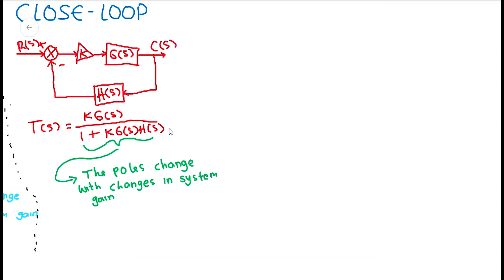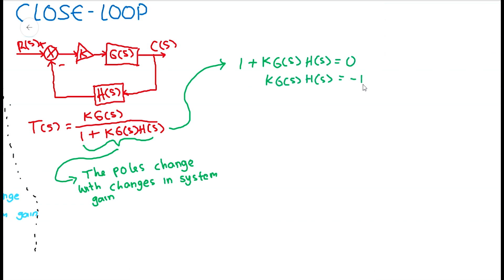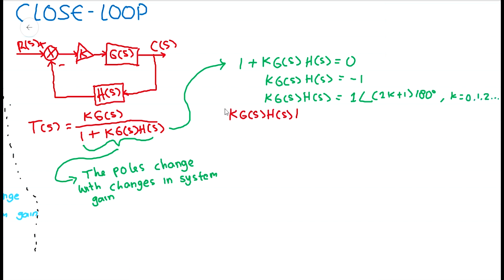Assume a pole S exists when the characteristic polynomial equals zero. We see that 1 plus K times G times H is equal to zero, and therefore K times G times H can be rearranged to obtain the value of minus 1. The value of minus 1 is represented in polar form, meaning there are two values: the magnitude and the angle.